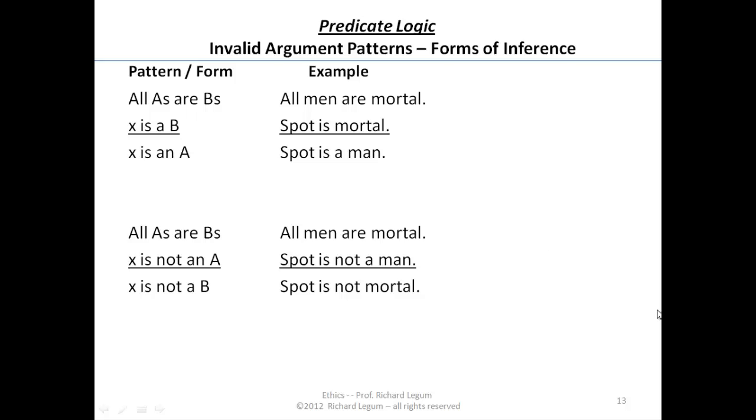And the other major invalid one, sometimes I like to call these the evil twins of the valid ones because they're going in the wrong direction. The last one is all men are mortal, Spot is not a man, therefore Spot is not mortal. Another one that doesn't work, right? Dogs are mortal, they're going to die. So all As are Bs, x is not an A, therefore x is not a B. Bad pattern.